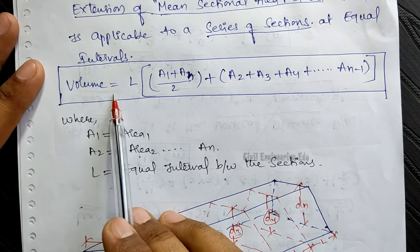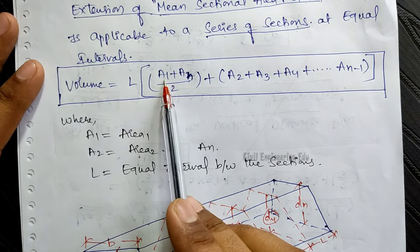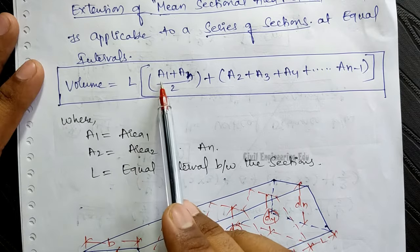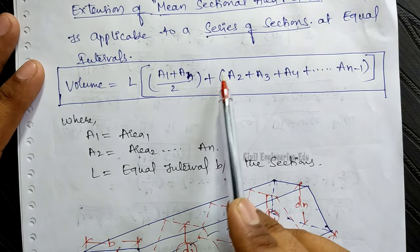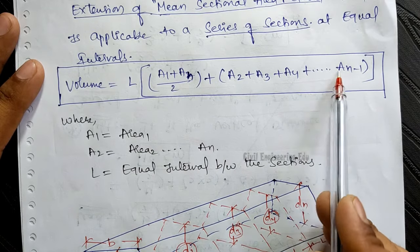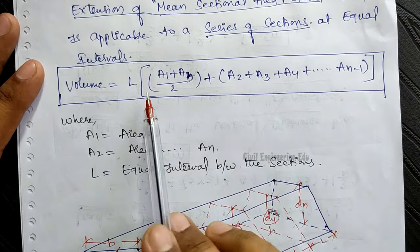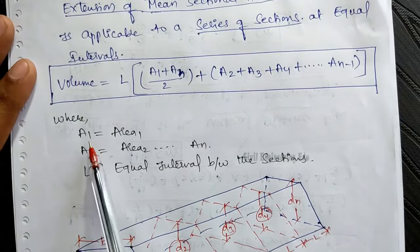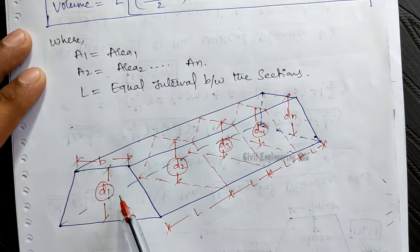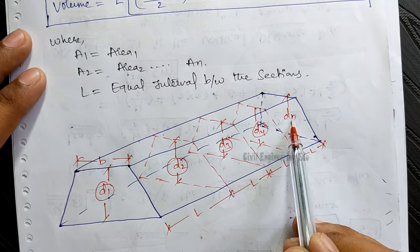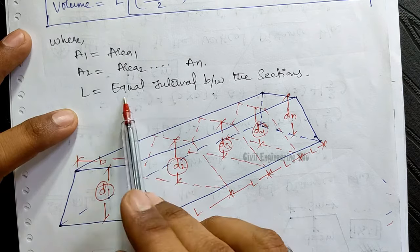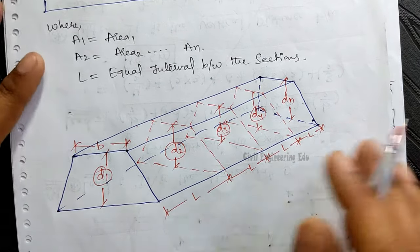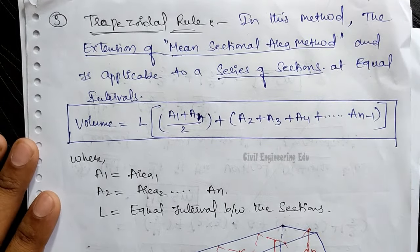The formula for the trapezoidal rule is: Volume = L × [(A1 + An) / 2 + A2 + A3 + A4 + … + A(n-1)], where we take the average of the first and last sections and add all the remaining intermediate section areas. Here A1, A2, …, An are areas at different sections, and L is the equal interval between sections.